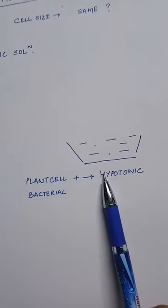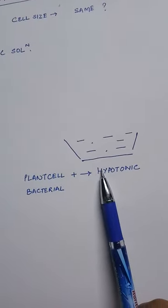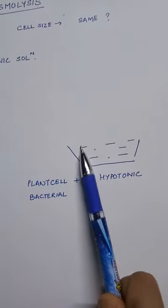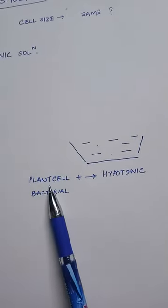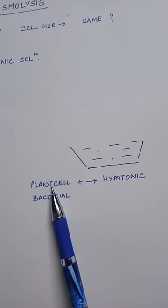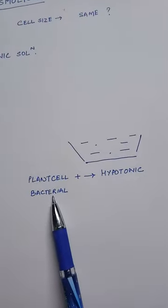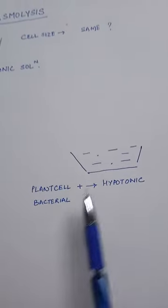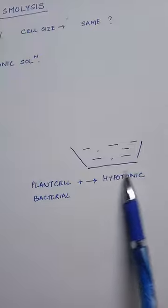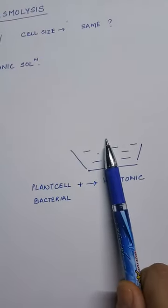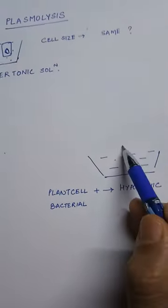Now what happens if the plant cell is kept in hypotonic medium? Hypotonic medium means it is very dilute medium. Plant cells have cell wall. What other cells have cell wall? Bacterial and fungal.